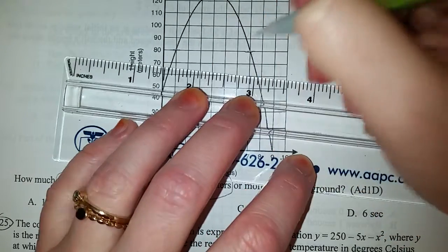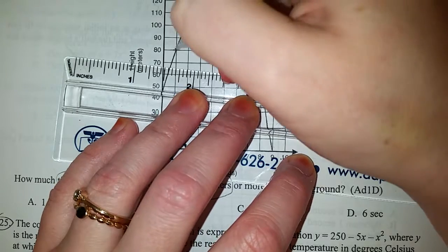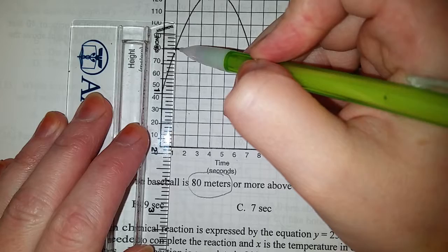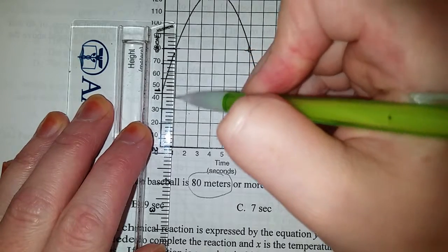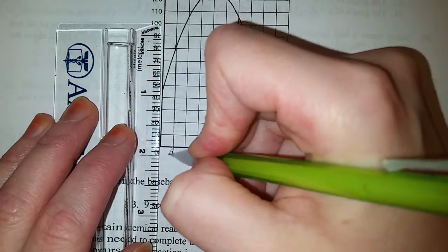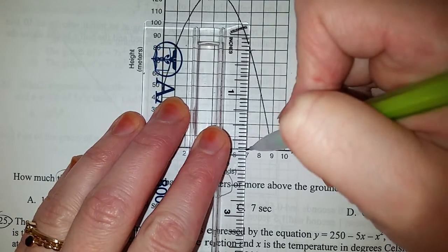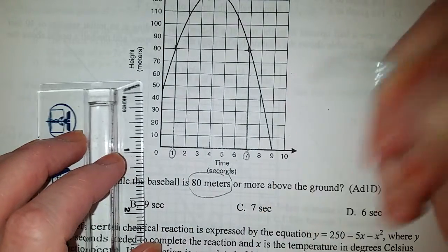80 meters is right here, so you need to move from that 80 meters up there from the graph down to your time. This would be one second, and at the end it would be seven seconds.